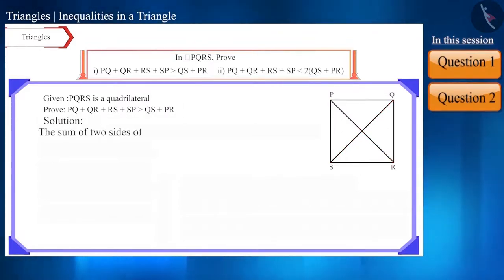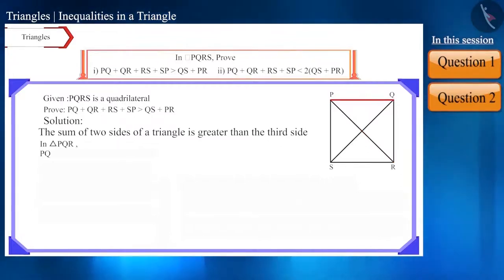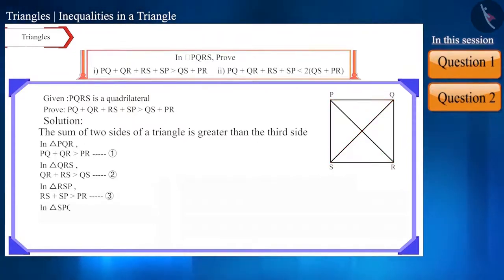In a triangle, the sum of two sides is greater than the third side. So in triangle PQR, we can say that the sum of side PQ and side QR is greater than side PR. Similarly, in triangle QRS, the sum of side QR and side RS is greater than side QS. In triangle RSP, the sum of side RS and side SP is greater than side PR. In triangle SPQ, the sum of side SP and side PQ is greater than side QS.